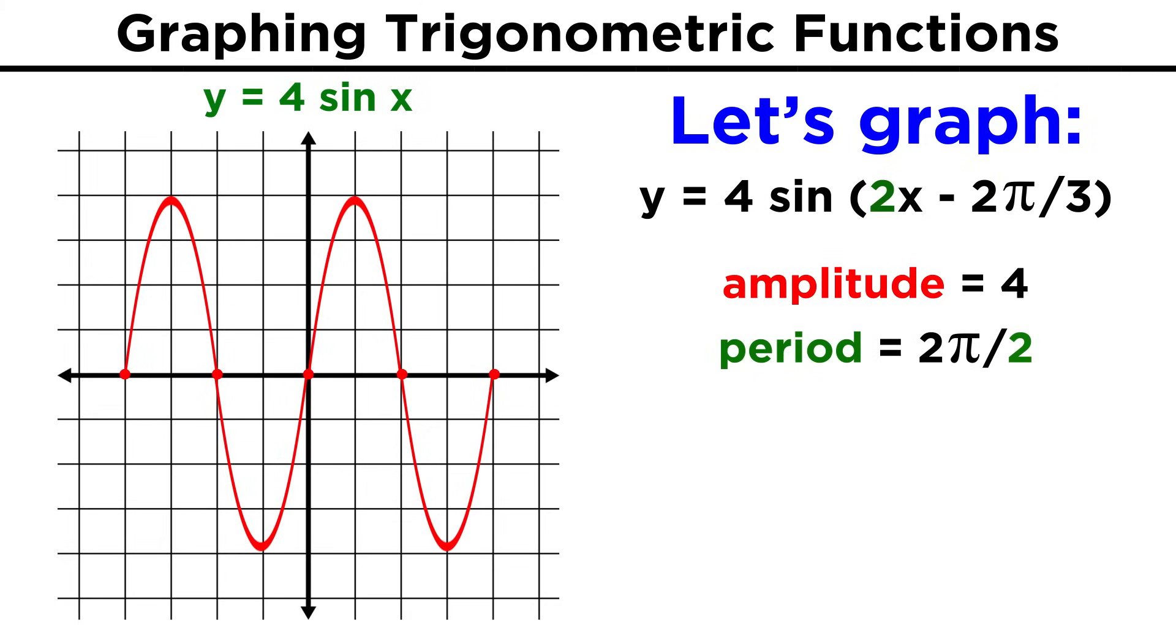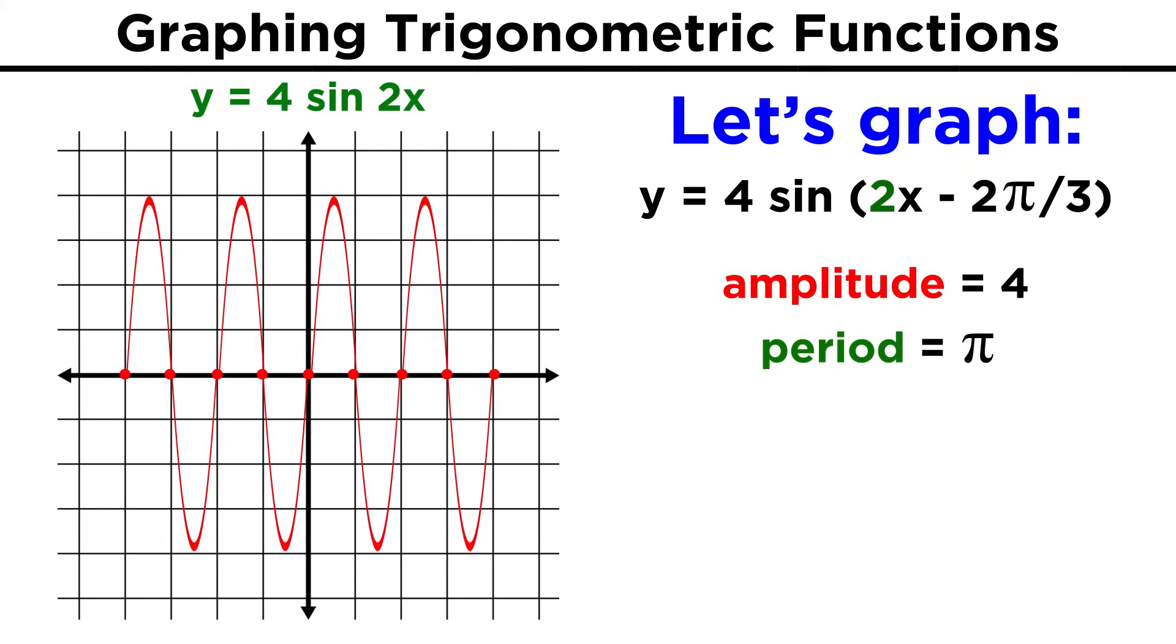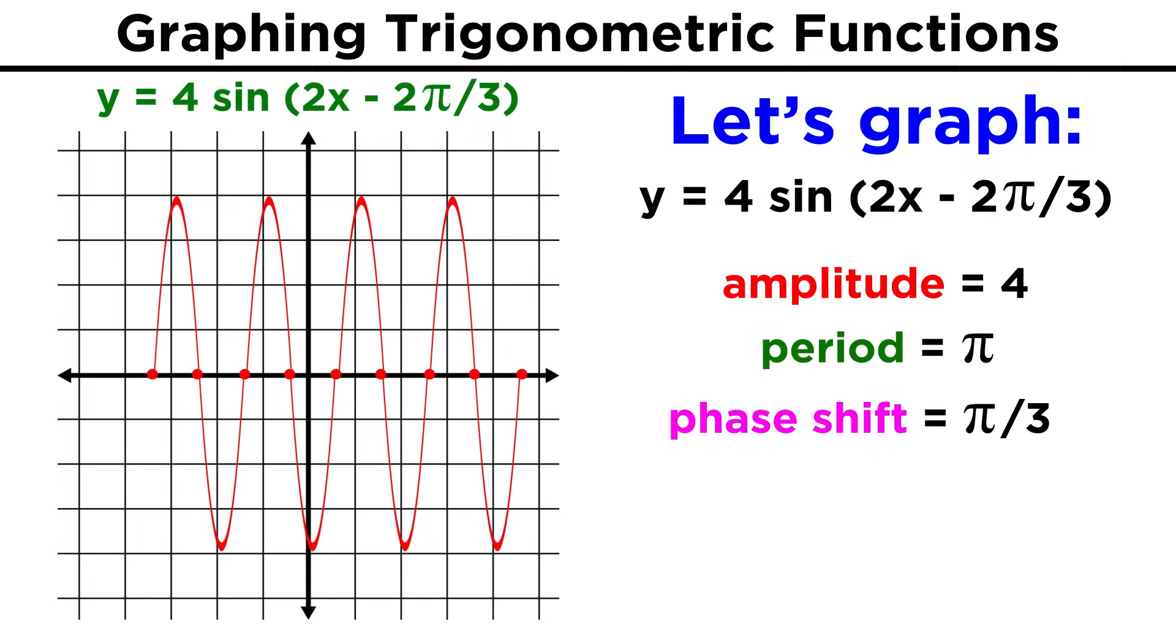Then let's find the period. That will be two pi over this term, so the period will be equal to pi. Then we find the phase shift. This term would mean that the whole thing is shifted two thirds pi to the right from the origin, but we have to divide that by this number, since this is causing things to contract, so that leaves us with pi over three.